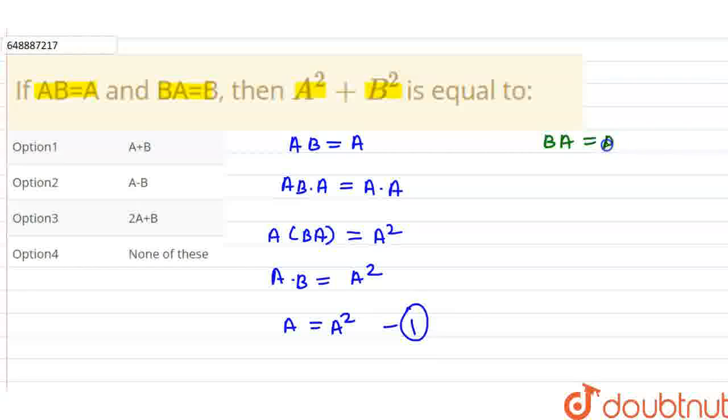Now we take BA equals to B. We multiply both sides by B. So B into A into B is equal to B into B. I multiply both sides by B in a bracket. Here A into B becomes B squared.